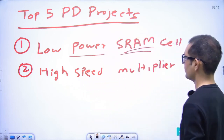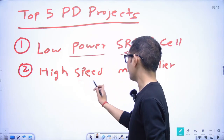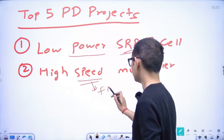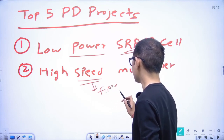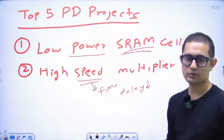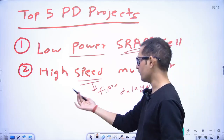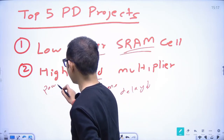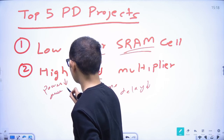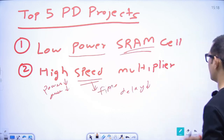The second project is high speed multiplier design. This is based on an algorithm and we are focusing on speed — delay should be low and performance should be high. We are also equally focusing on power, which should be low, and area, which should also be minimal. Speed must be high — this is the second project: design a high speed performance multiplier.